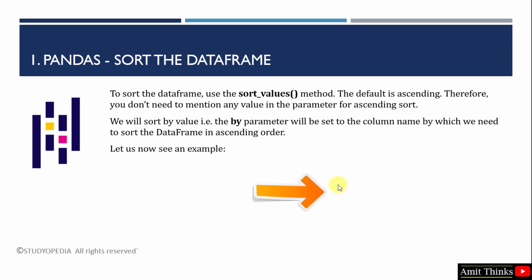To sort the DataFrame in ascending order, which is the default, we use the sort_values method. For an ascending sort you don't need to mention any value in the ascending parameter because ascending is the default. If you want to sort by a specific column name, mention it in the 'by' parameter of the sort_values method. Let us see the example.